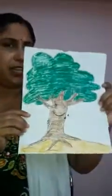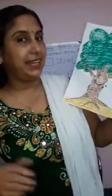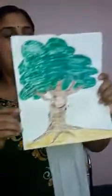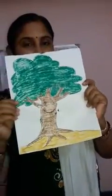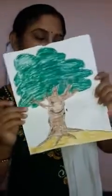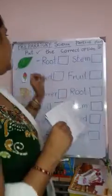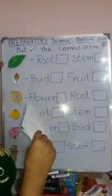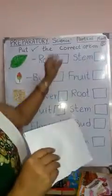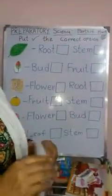So today, we already know the parts of plant names and the spellings. The tree is also with us today. We will do a different activity — tick the correct option. This will be our last activity of parts of plants.